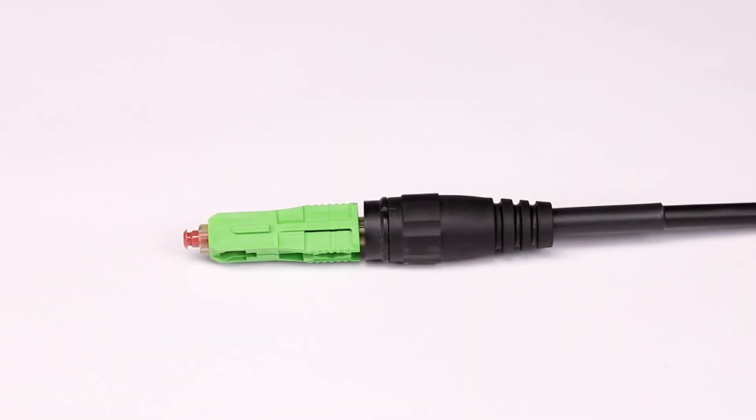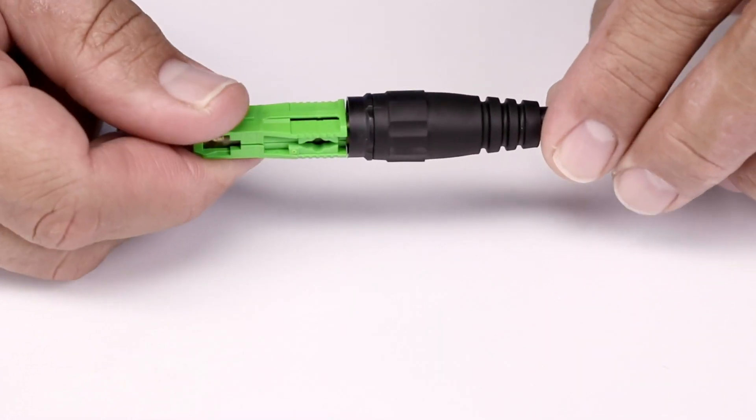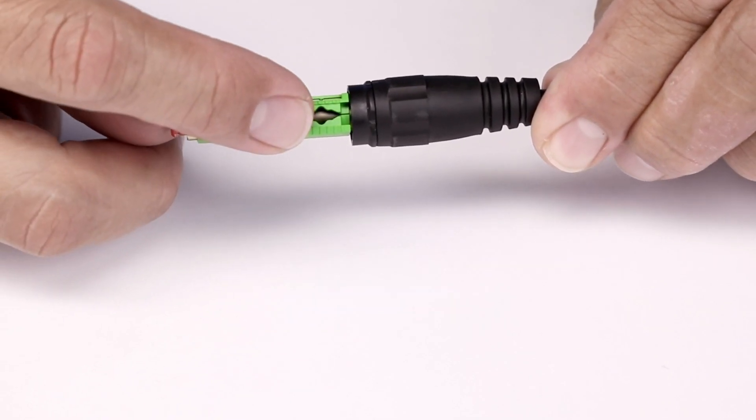To remove the SCAPC converter from a Prodigy connector, the converter housing will need to be cracked open.